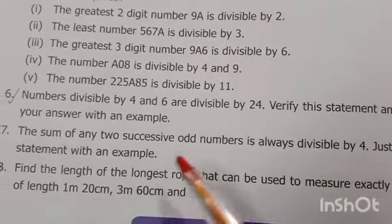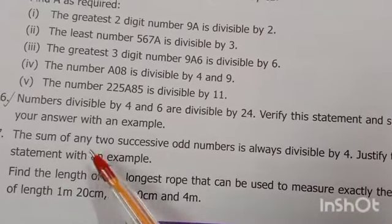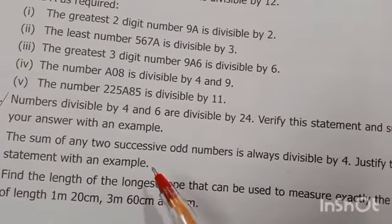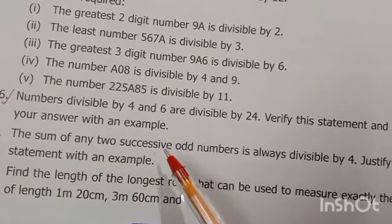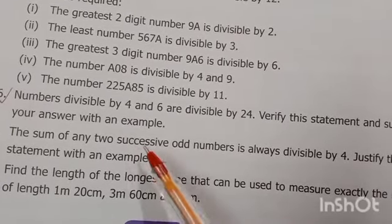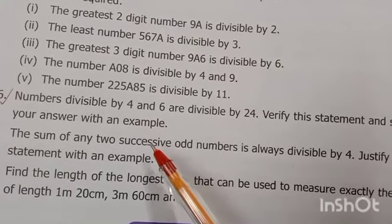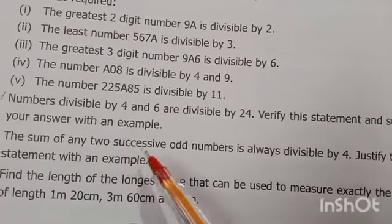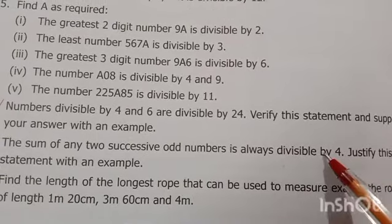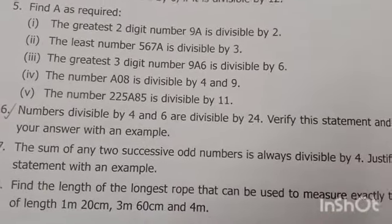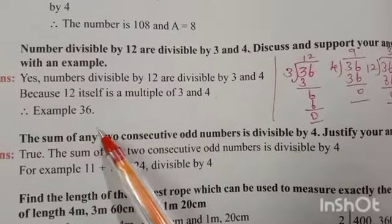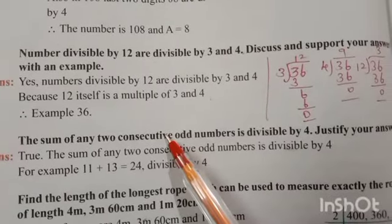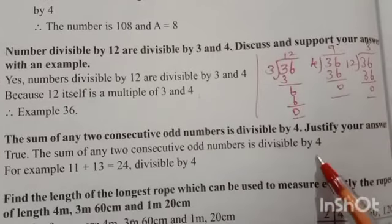Seventh question: The sum of any 2 successive odd numbers is always divisible by 4. Justify this statement with an example. Successive means consecutive, meaning continuous odd numbers like 1, 3, 5... The given statement is true because the sum of any 2 consecutive odd numbers is divisible by 4.